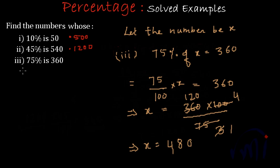That means 75% of 480 will be 360. Want to cross check? We'll do it. 75% of 480.